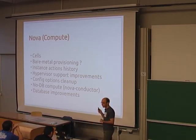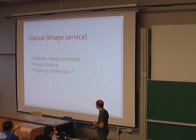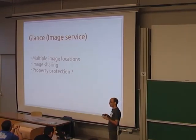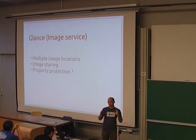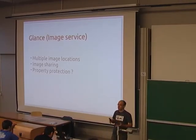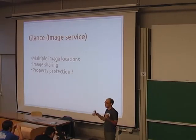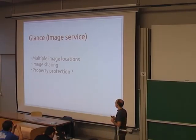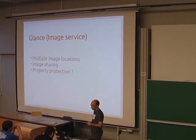Finally for Nova, a lot of database improvements: introduction of new unique keys, indexes, and the ability to archive deleted data to keep your database tight and efficient. For Glance — the component that handles disk images for Nova — they implemented multiple image locations, allowing you to upload the same image to multiple different places and choose your preferred delivery method. Image sharing is the ability to share the same image across multiple tenants. Property protection is more fine-grained control over image metadata, allowing only part of the metadata to be changed by a given user.